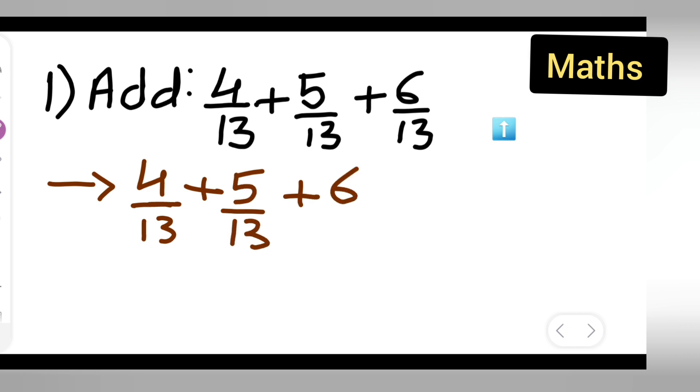Now, basically this is equal to what? Here 13 is common in all - the denominator is the same. So write down (4 + 5 + 6)/13.